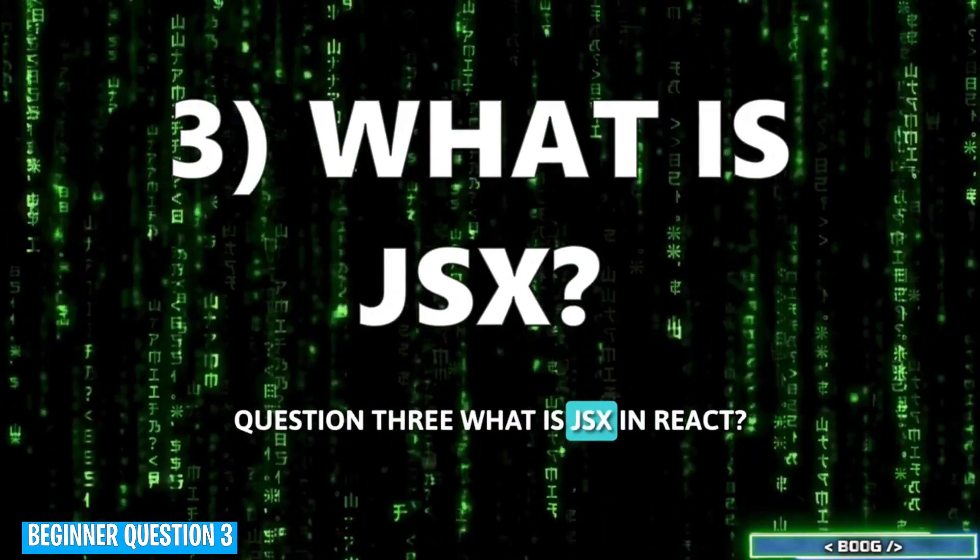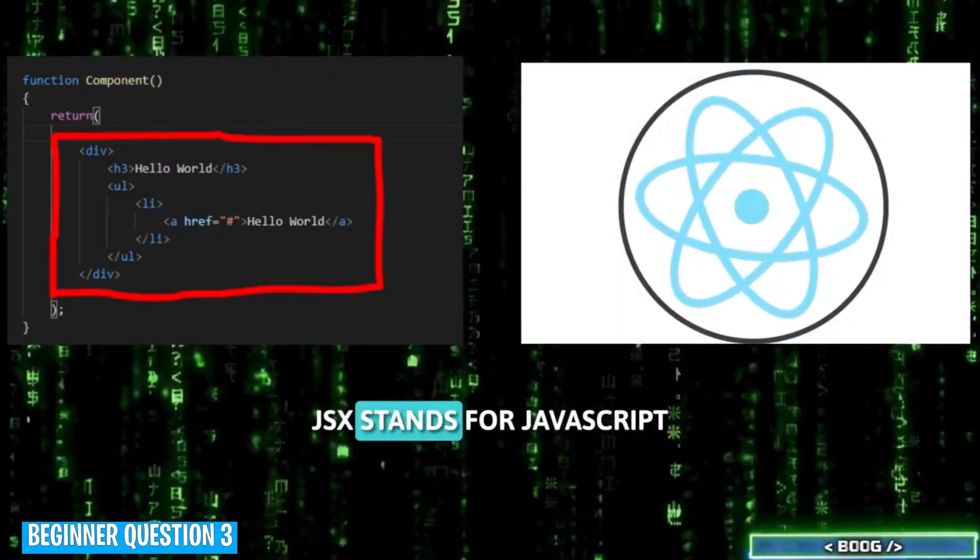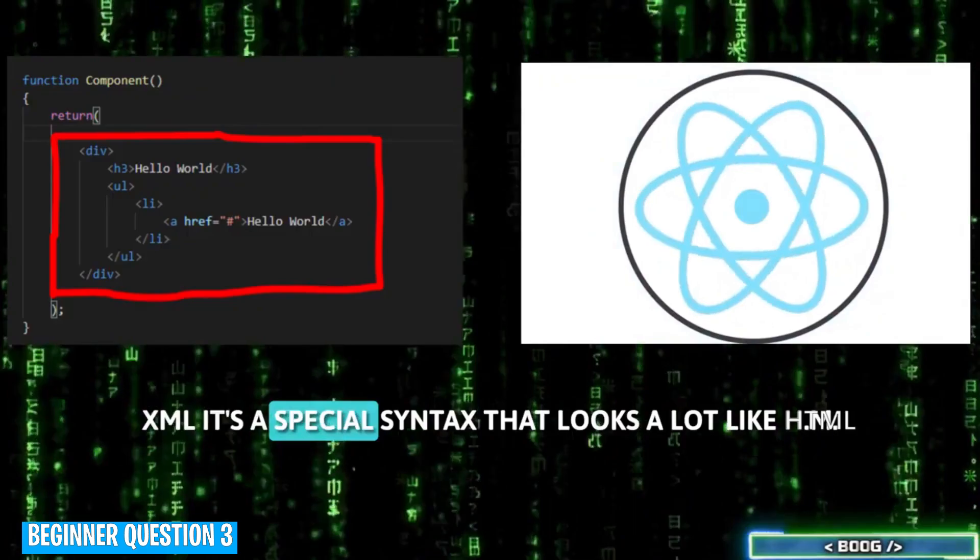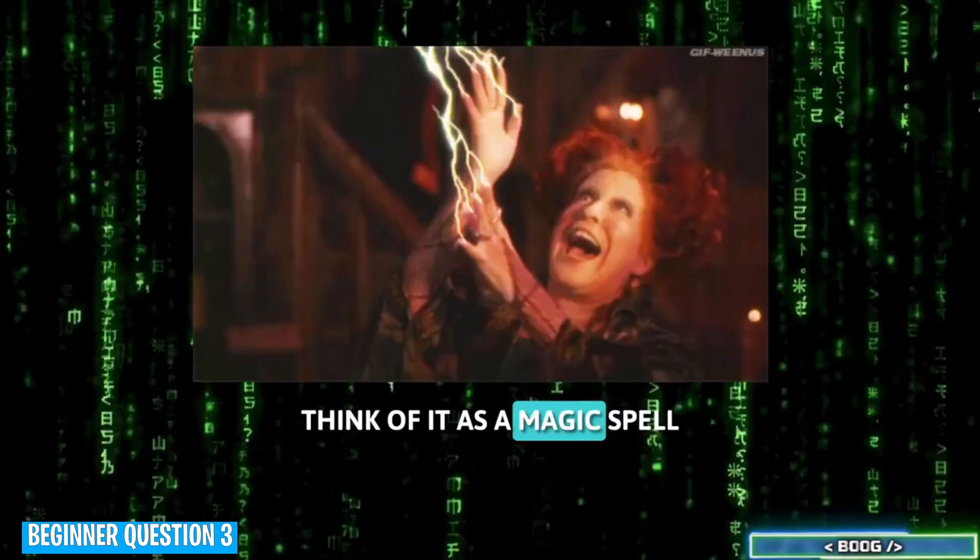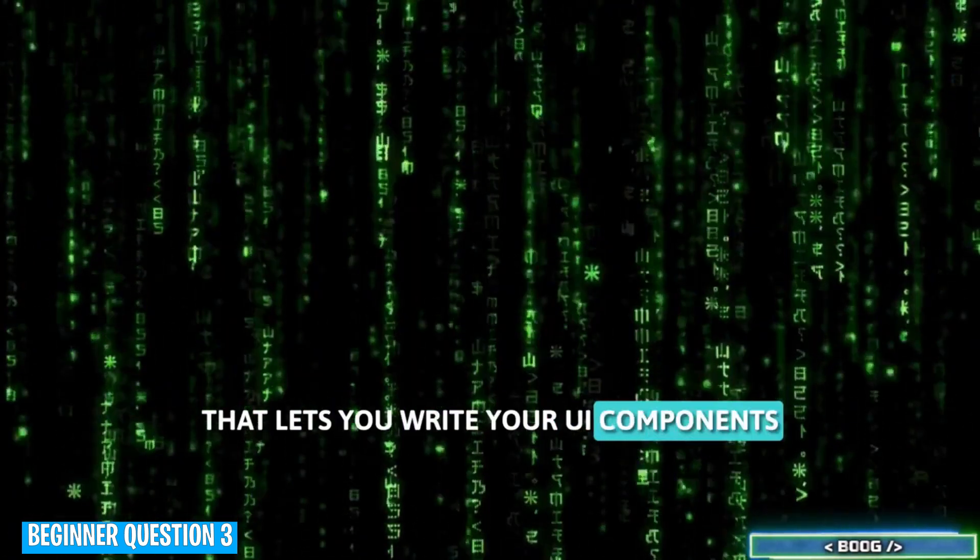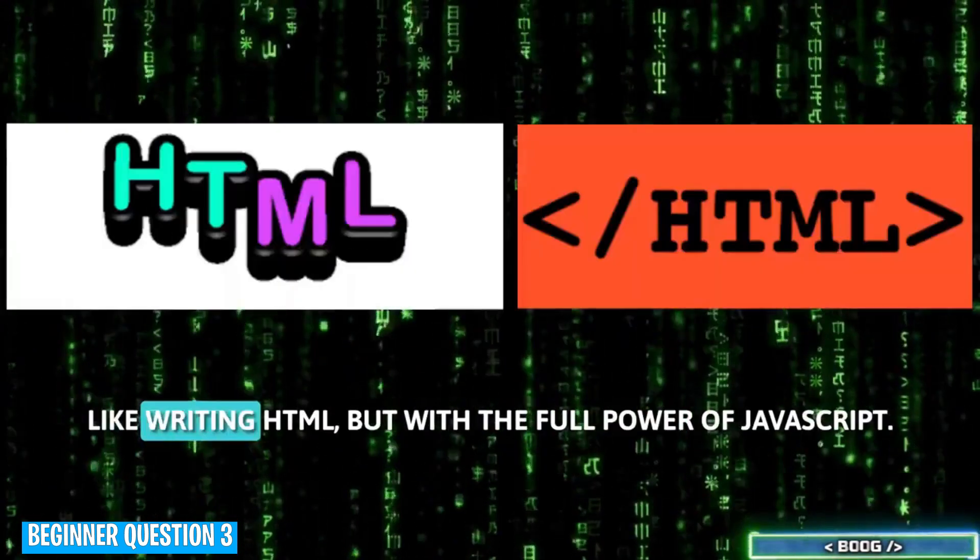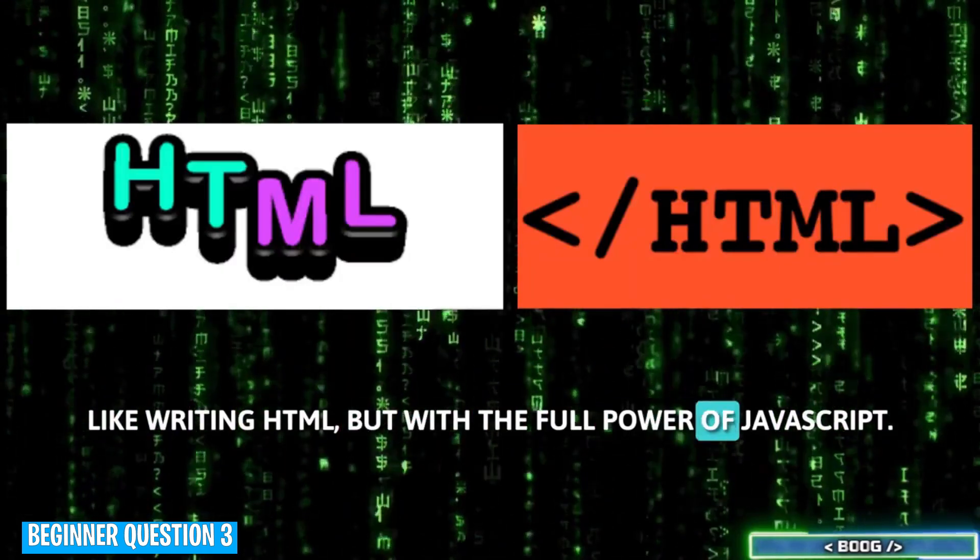Question 3. What is JSX in React? JSX stands for JavaScript XML. It's a special syntax that looks a lot like HTML and is used within JavaScript code. Think of it as a magic spell that lets you write your UI components in a way that feels familiar, like writing HTML,